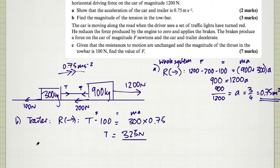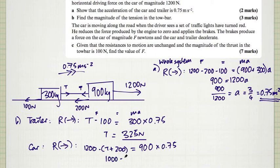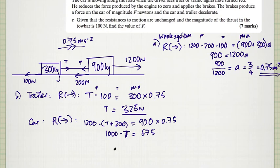You could also isolate the car instead as a check. The things acting forwards are the 1200, and the things acting backwards are the tension and the 200 newtons of resistance. That gives 1200 minus T minus 200 equals 900 times 0.75, which is 675. So 1000 minus T equals 675, rearranging gives T equals 325 newtons — the same answer, as expected.